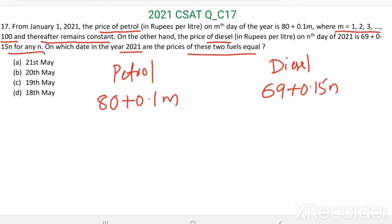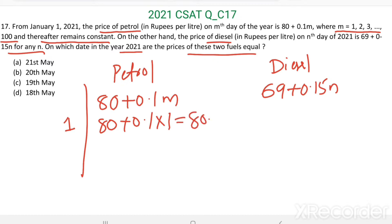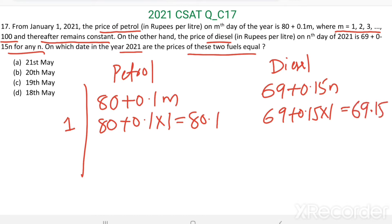On day 1, the price of petrol is equal to 80 plus 0.1 times 1, which equals 80.1 rupees. On day 1, the price of diesel is equal to 69 plus 0.15 times 1, which gives 69.15 rupees. So from here, it is clear that the price of petrol is greater than the price of diesel.